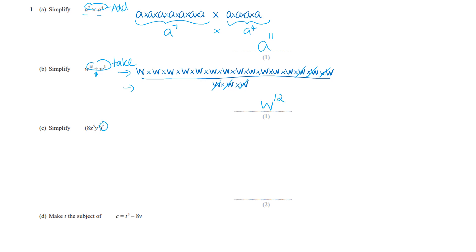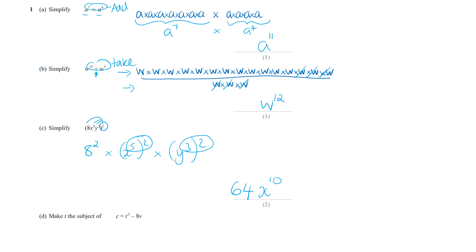Anything outside of a bracket operates on everything inside the bracket. We have 8 squared times x to the 5 all squared, times y cubed all squared. So 8 squared is 64. The rule is when you've got a power of a power, you multiply those two numbers — so that's x to the 10. Then y cubed all squared: multiply the 3 and the 2 to get y to the 6.